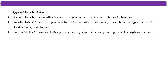There are three types of muscle tissue. Skeletal muscle is responsible for voluntary movement and is attached to bones and tendons. Smooth muscle controls involuntary movement and is found in the walls of hollow organs such as the digestive tract, blood vessels, and bladder. Cardiac muscle, as the name indicates, is found exclusively in the heart and is responsible for pumping blood throughout the body.